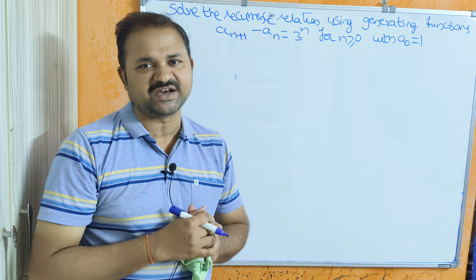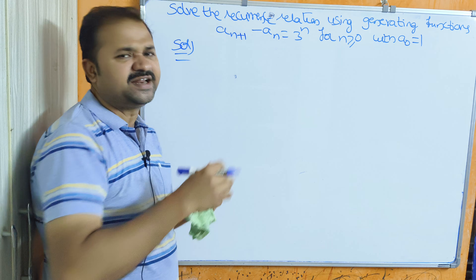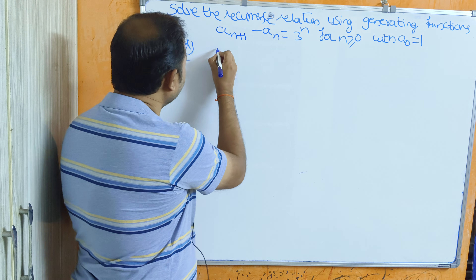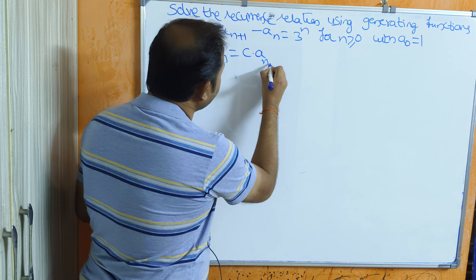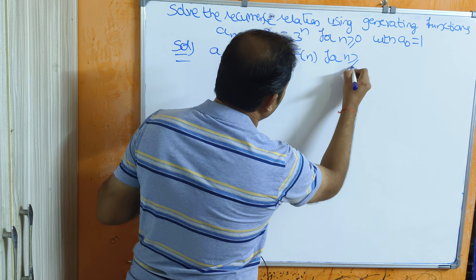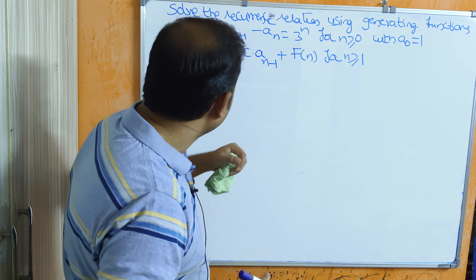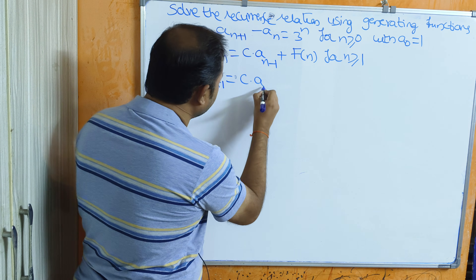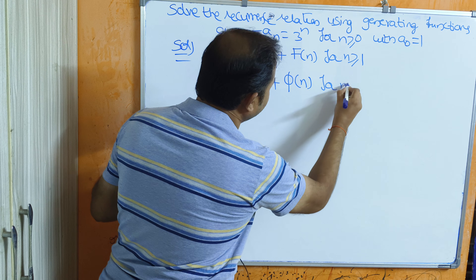We will get a generating function as the output. This is a first order recurrence relation. We know that a first order recurrence relation is of the form a(n) equal to c times a(n-1) plus f(n) for n greater than or equal to 1. We can also write it as a(n+1) equal to c times a(n) plus f(n) for n greater than or equal to 0.